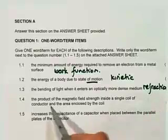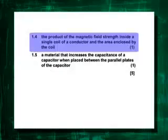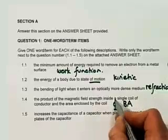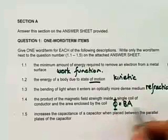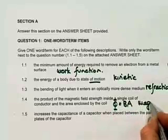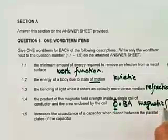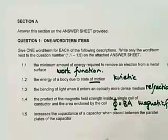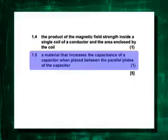The product of the magnetic field strength inside a coil of a conductor and the area enclosed by that coil — it's this thing phi, and it's the magnetic flux. That's in the data sheet.